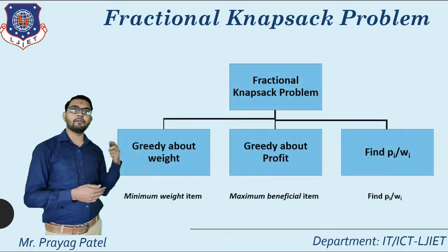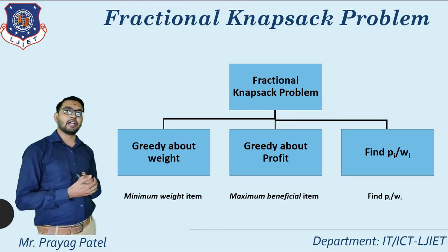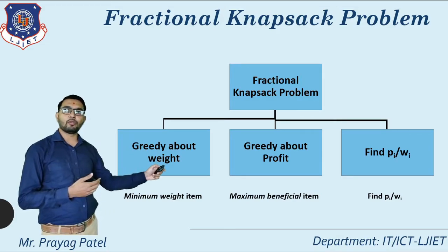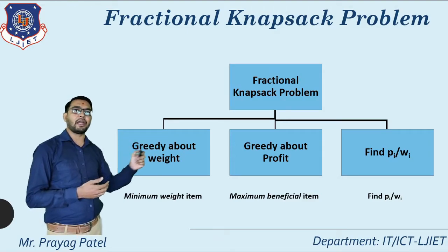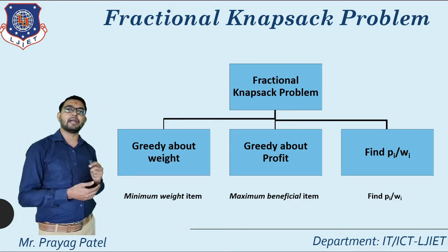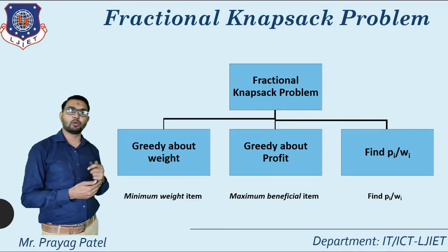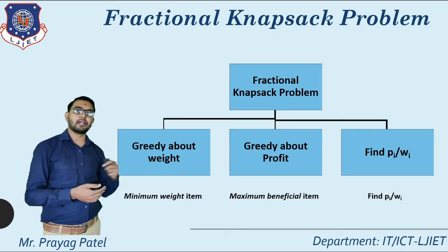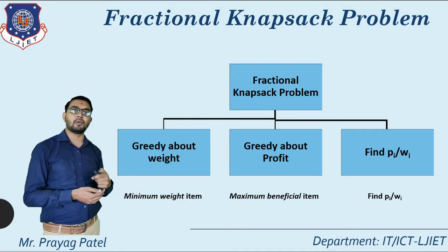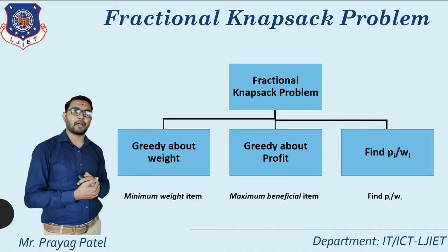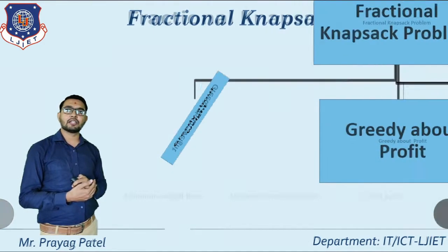Now how can we find the knapsack problem solution using the greedy algorithm? In greedy algorithm, there are three methods for finding the fractional knapsack solution: first is greedy about weight — select the minimum weight item first; second is greedy about profit — select the item with maximum profit first; and third is find Pi upon Wi (profit-to-weight ratio) and select objects accordingly. Here we consider the first method: greedy about weight, with capacity M equal to 50.